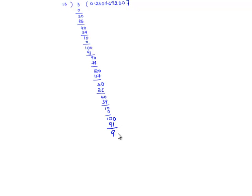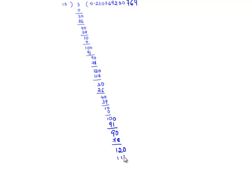Because of the decimal point, 9 becomes 90. 13 goes in 90 six times, so we have 13 times 6 is 78. The remainder is 12. Because of the decimal point, 12 becomes 120, and 13 goes in 120 nine times. So we have 13 times 9 is 117, and we are left with remainder 3.